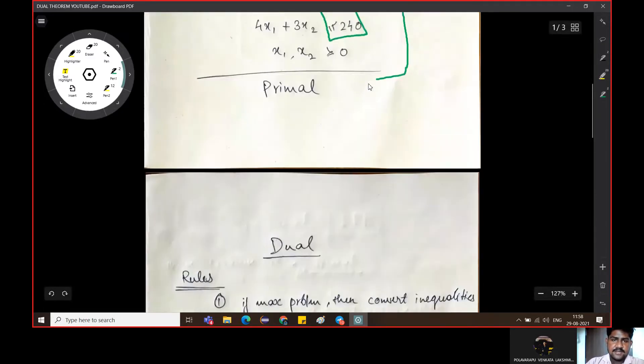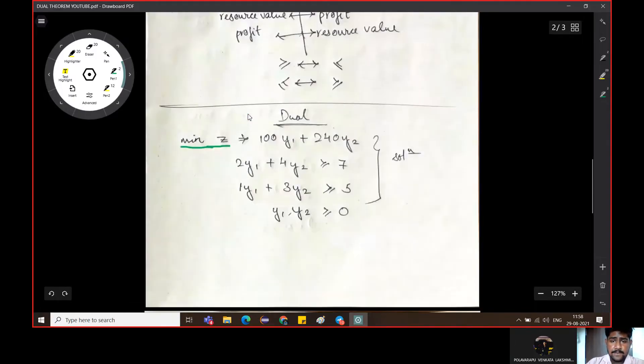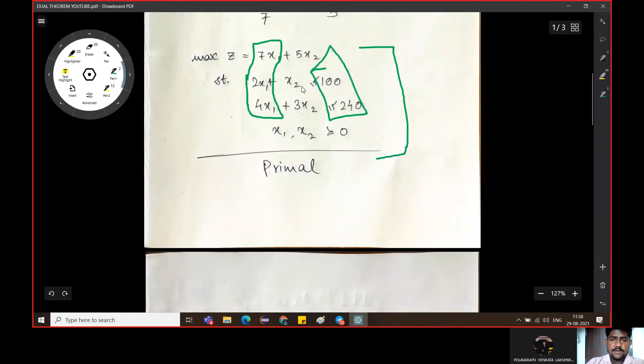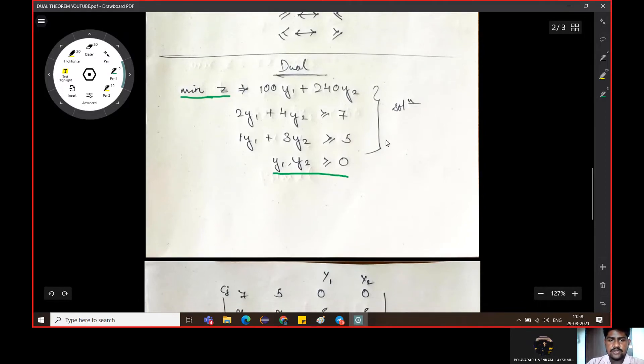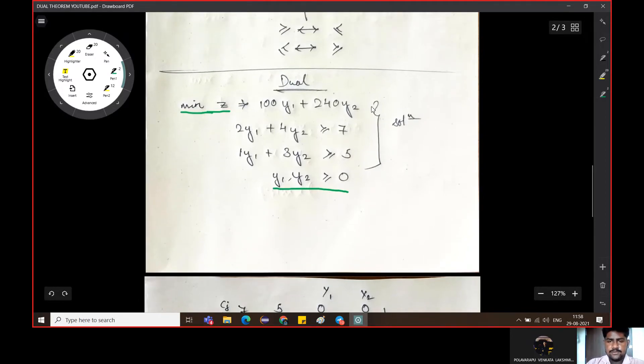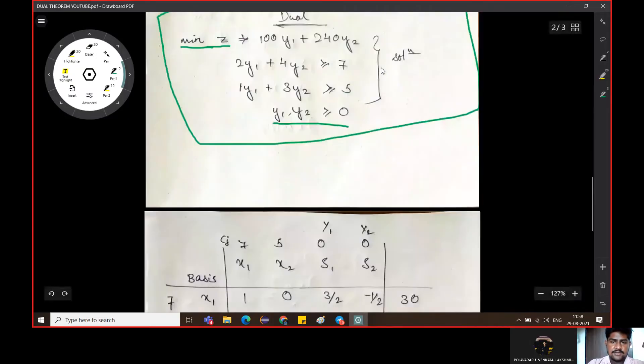Constraints: y1 plus 3 y2 will be greater than equal to 5. This is one constraint and y1 comma y2 should always be greater than 0. And then this is the dual solution converted. Primary to dual convert. This is the final solution convert. And one more thing starting is that solution remains the same. Now let's see.